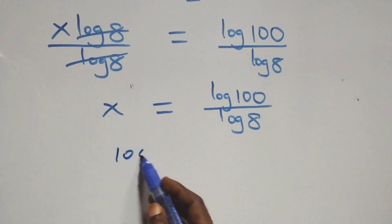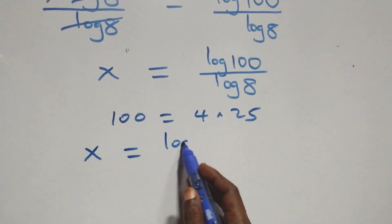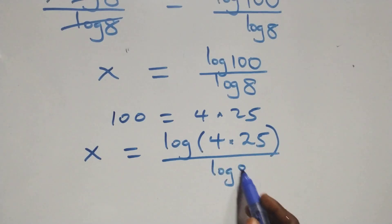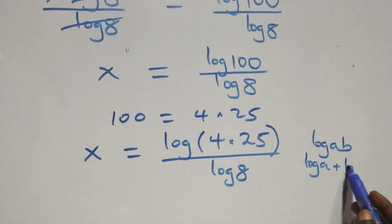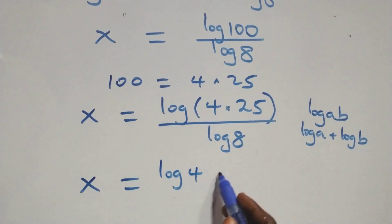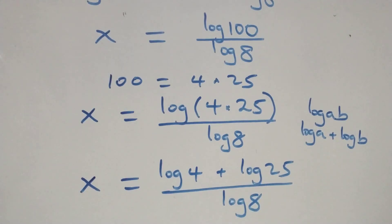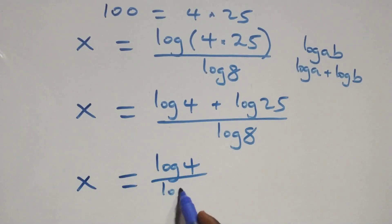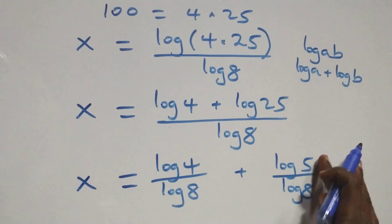The next step: we can separate 100 as 4 times 25. So what we have becomes x equals log(4 times 25) over log 8. Then we separate this into two fractions: x equals log 4 over log 8 plus log 25 over log 8.